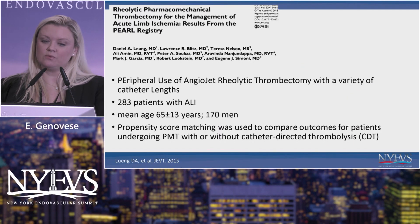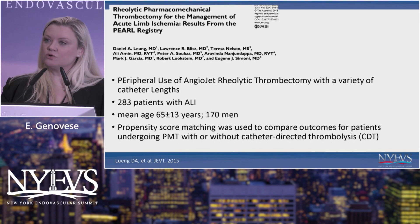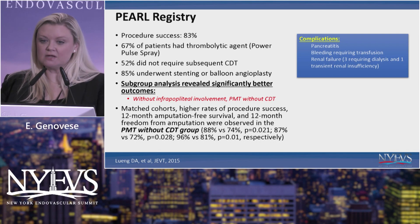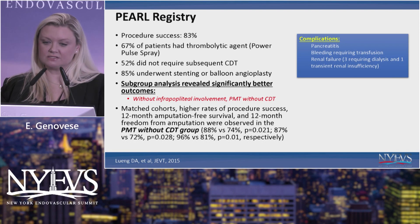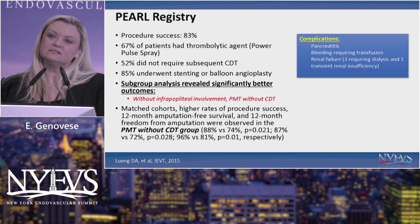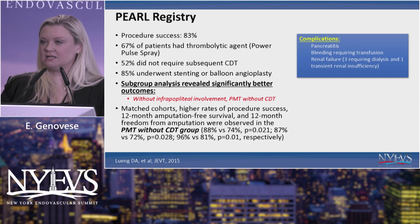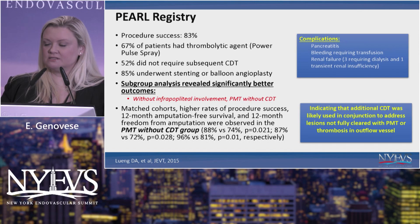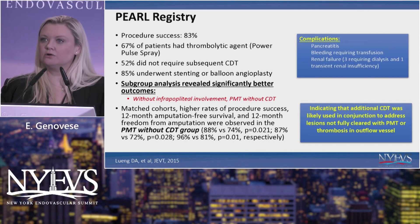The PERL registry is a registry of about 300 patients with acute limb ischemia treated with AngioJet. They looked at a propensity score of those who had AngioJet treatment alone versus AngioJet plus catheter-directed thrombolysis. The results showed a pretty high success rate — 83% of patients were able to be fully treated endovascularly, and about 50% required subsequent catheter-directed thrombolysis. The complications include pancreatitis, bleeding, and acute kidney injury. Patients without infrapopliteal involvement who did not need catheter-directed thrombolysis did better, suggesting CDT was being used to address underlying lesions not fully cleared or distal embolization.